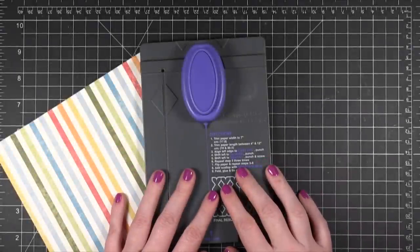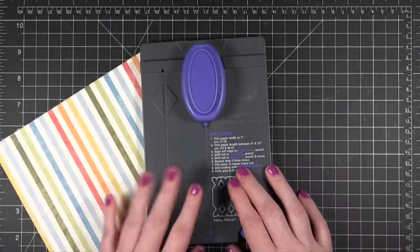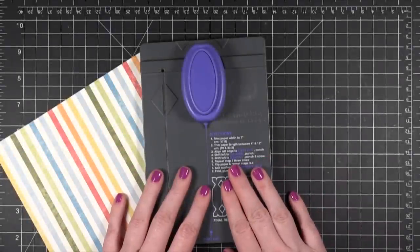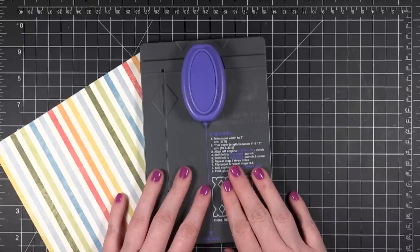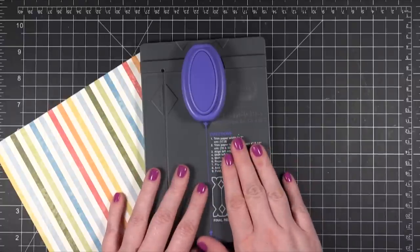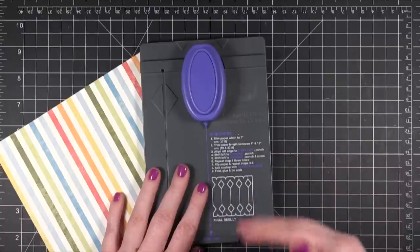Hi everyone, welcome to another video for simonsaysstamp.com. Today I'm going to quickly show you how you can use the We Are Memory Keepers Candy Box Punch Board. This is a great tool for our upcoming Valentine's Day season. You can put some treats inside the box.